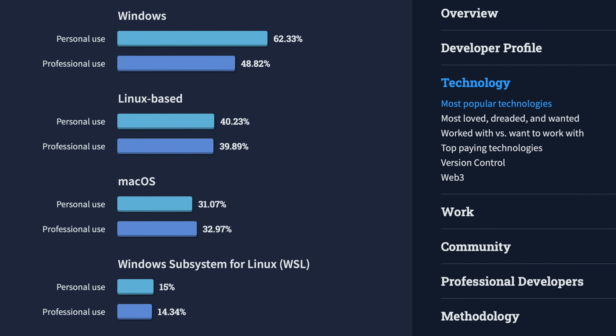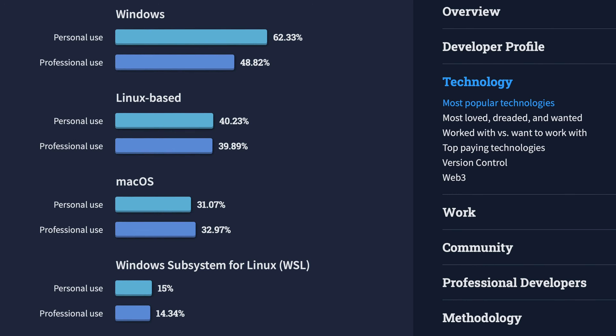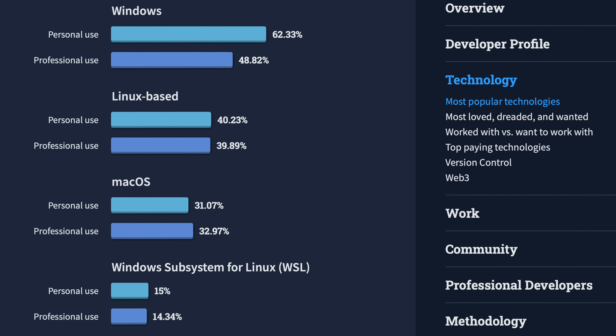If you look at the Stack Overflow survey this year, you see that almost half of software developers use Windows, about 40% use Linux, and about a third use macOS. Those percentages add up to more than 100%, but of course lots of developers use multiple OSs in their work. I'll share five reasons why I think macOS is a great option for software developers, and five reasons why I think you should avoid it.